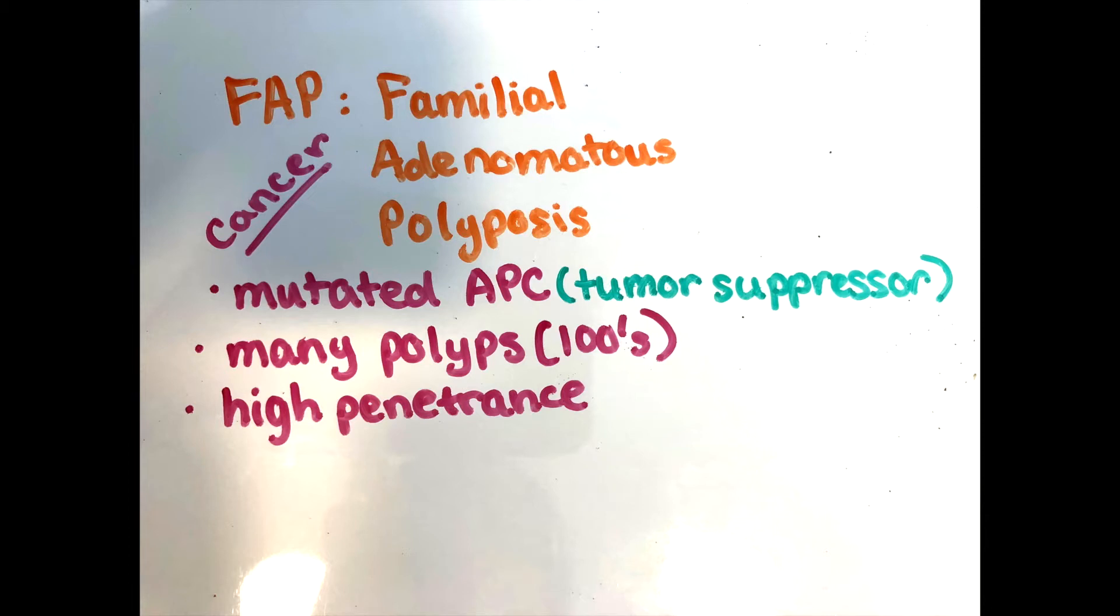FAP is an autosomal dominant germline mutation of the APC tumor suppressor gene that's located on chromosome 5Q. The characteristic feature of FAP is that the patient has thousands of polyps on colonoscopy. This disease has high penetrance and 100% of cases of FAP often lead to colon cancer.